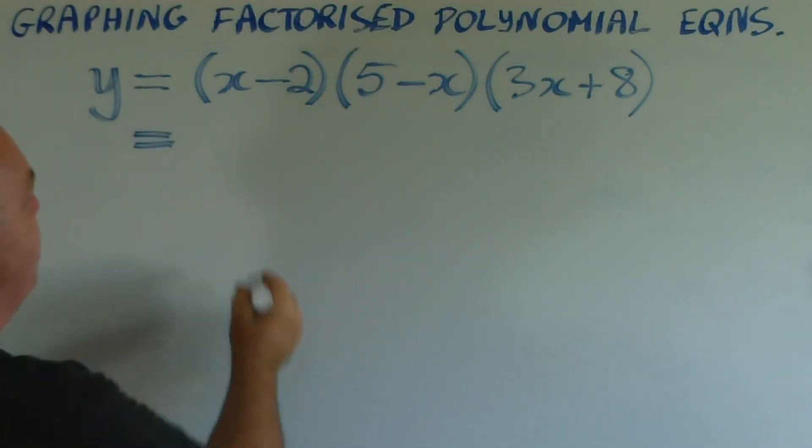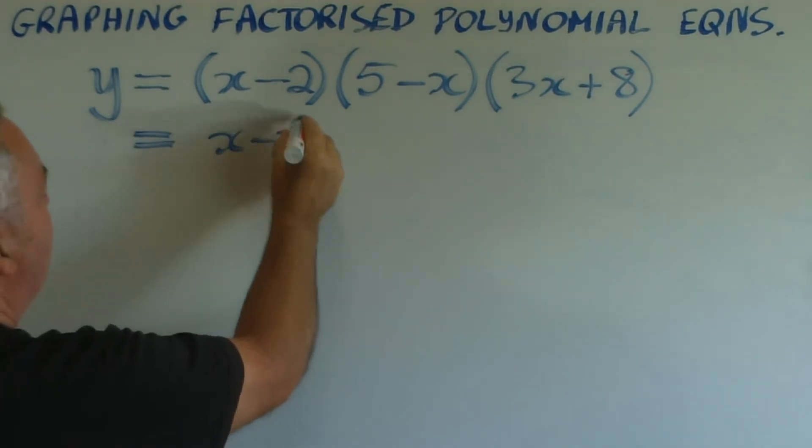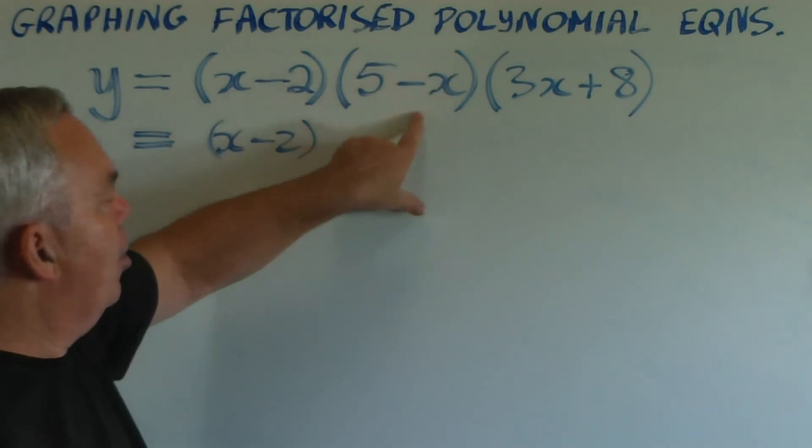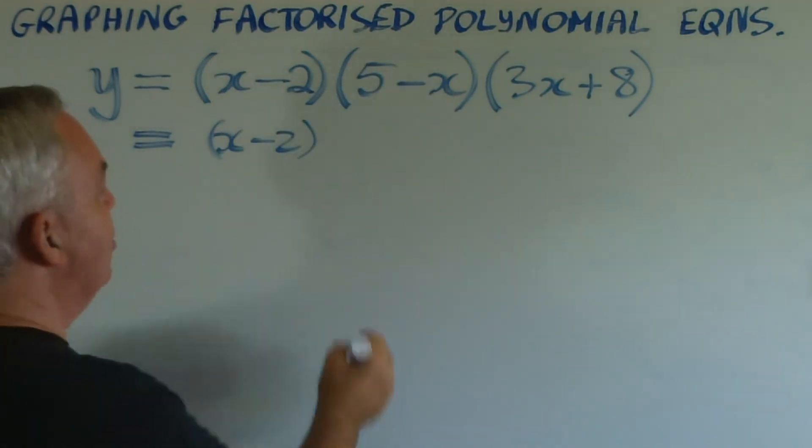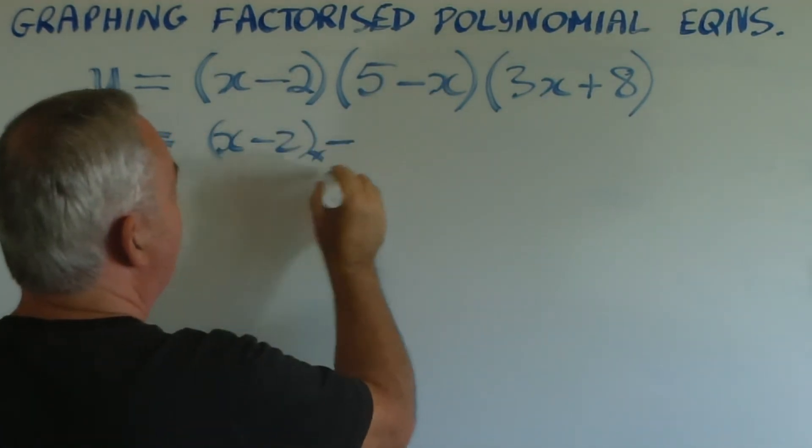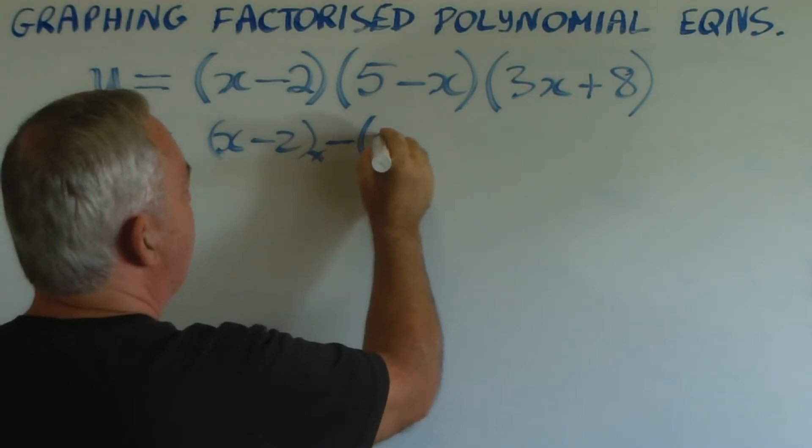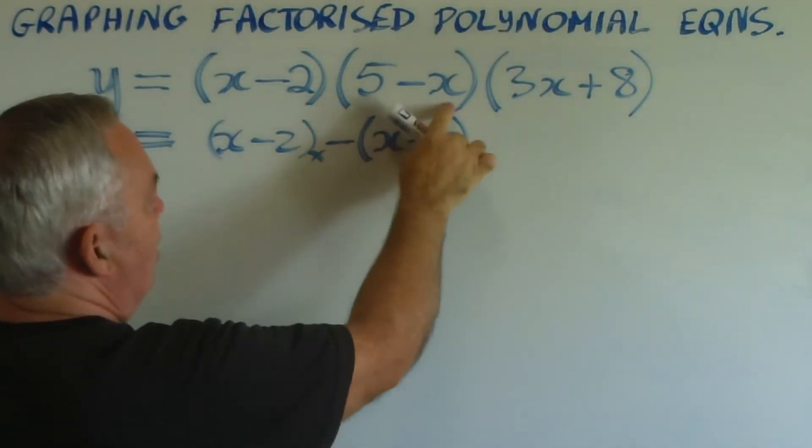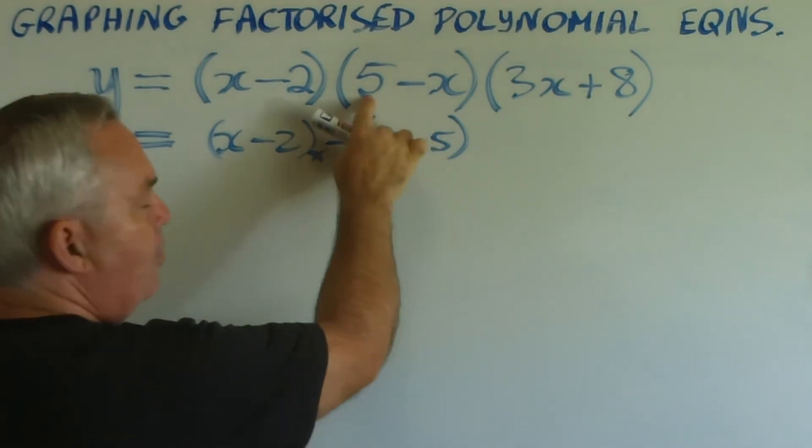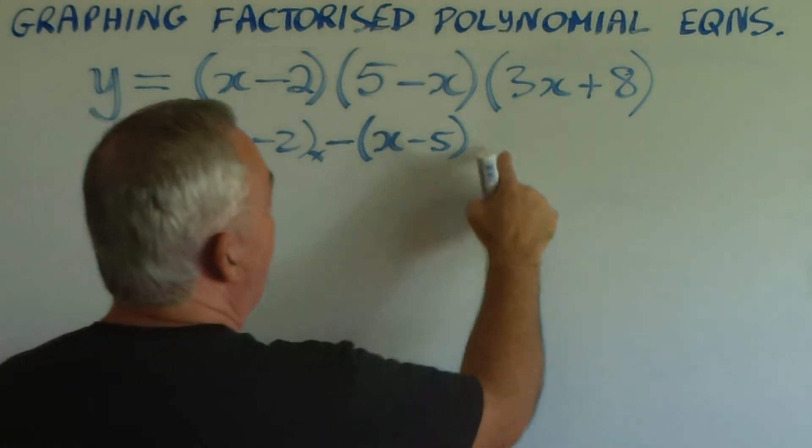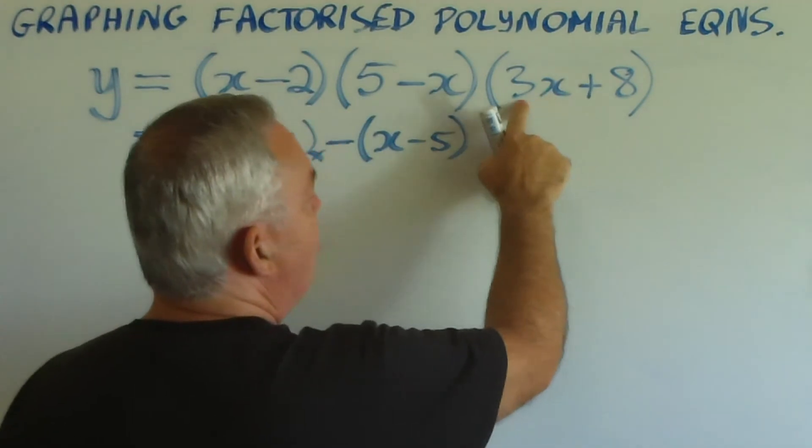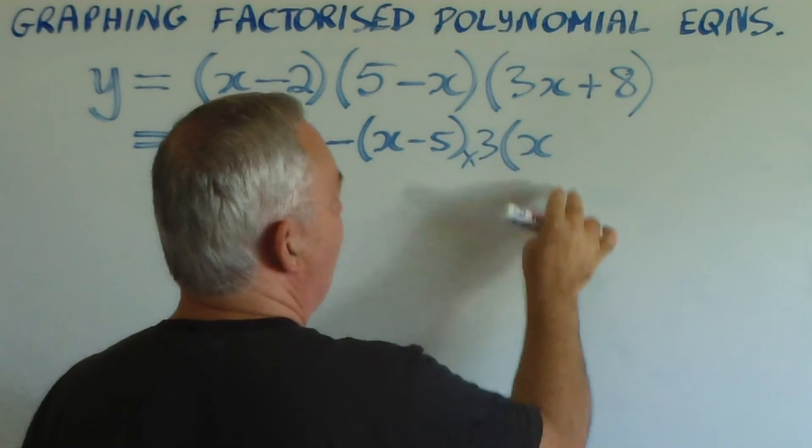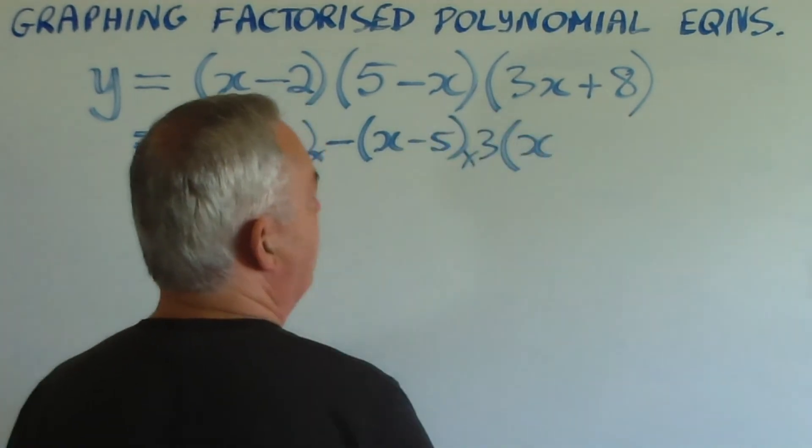If we fully factorize this, the first term doesn't need any change, but the second term, the coefficient of x, is minus one. And we can take that out, outside the parentheses, and fully factorize this factor.